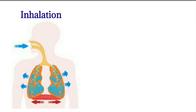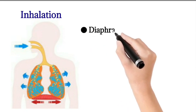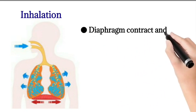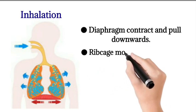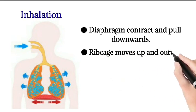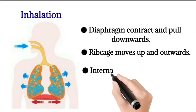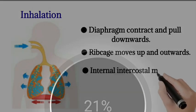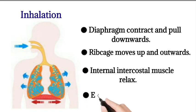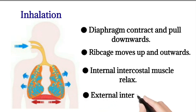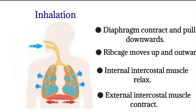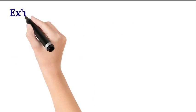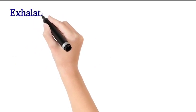Next we move on to inhalation — what happens when you breathe in. See the picture. The diaphragm contracts and pulls downwards. The ribcage moves up and outwards. The internal intercostal muscles relax and the external intercostal muscles contract.